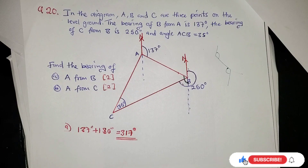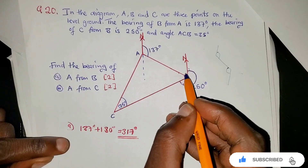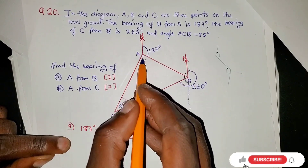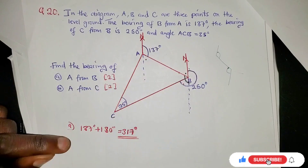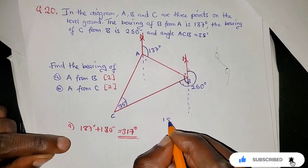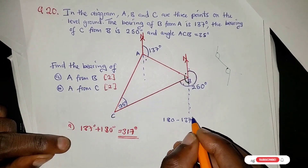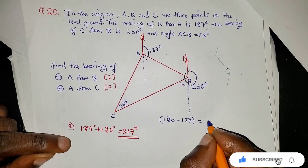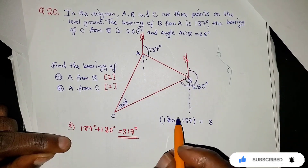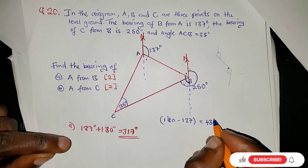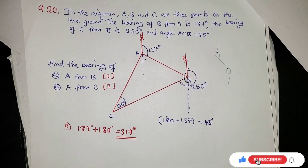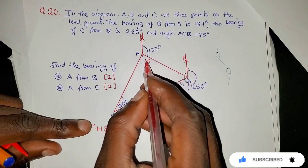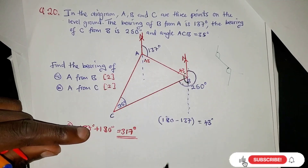You can also use a different method and still find the same answer. You can find this angle and subtract it from 180°. Since the straight line is 180° and we are given 137°, we subtract: 180 minus 137 equals 43°. This angle is labeled as 43°.